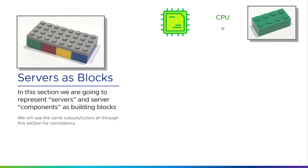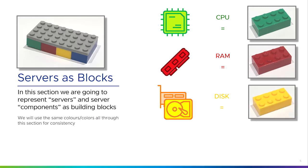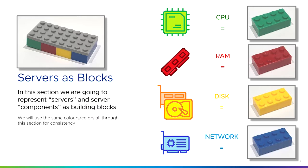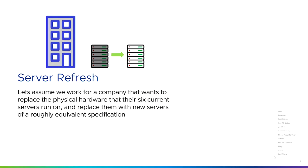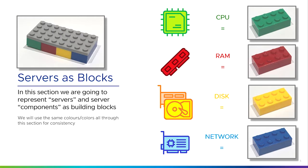In this 100% unofficial example, we're going to use a green building block to represent a single CPU, a red building block to represent RAM or random access memory, a yellow building block to represent a disk or storage device, and a blue building block to represent a network or network device.